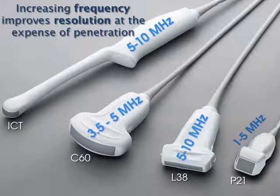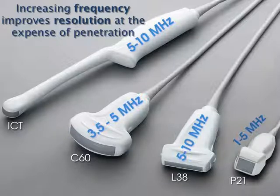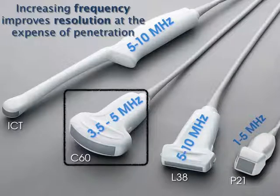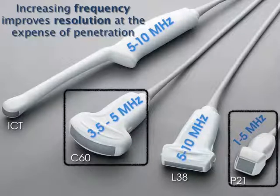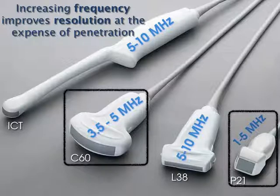Which transducer do we use to image the bladder? Higher frequency gives better resolution at the expense of penetration, but the bladder is usually in a distant location — not right against the skin. So we need a low enough frequency to penetrate, and that's when we use either the C60 or the P21. Most machines have the P21, which works fine for the bladder. Ideally the C60 looks a bit prettier with more crystals, but either of the other two probes could work in a pinch, though not ideally.